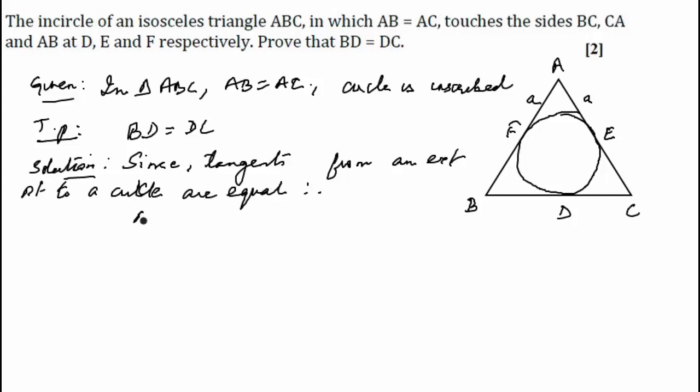Therefore, we can write that AF is equal to AE. Let us mark it as A. BF is equal to BD. Let us mark it as B. And CD is equal to CE. Let us mark it as C for our convenience.